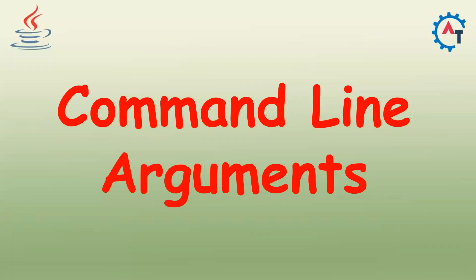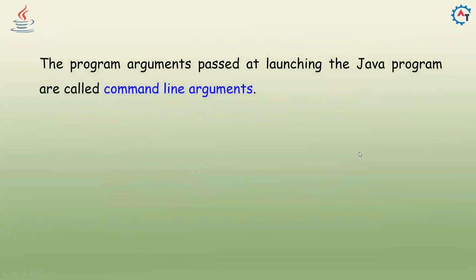In this video, we will see command line arguments in Java. So what do you mean by command line arguments? The Java program arguments passed at launching the Java program are called command line arguments. You want to pass some arguments that you are not passing from your program — you are passing while you are executing your program. So that is called command line arguments.